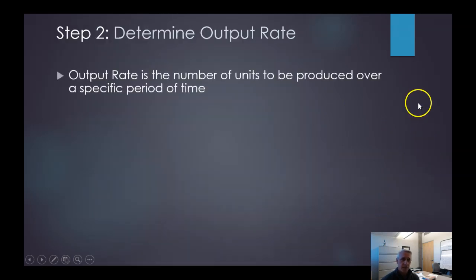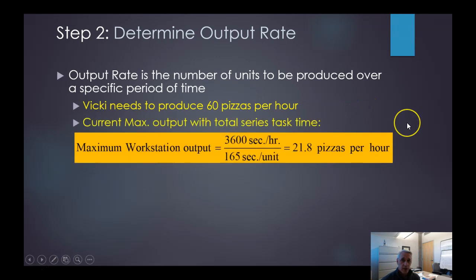Okay, so now we determine our output rate. The output rate is the number of units to be produced over a specific period of time. So in the example we have, the owner Vicki needs to produce 60 pizzas an hour. She needs to figure out how she can do that. So the current max of what she has is how many seconds are available to her in an hour and what's the total series task time she's working with now. And we calculated the total series task time of 165 seconds per pizza or per unit, but she has 3600 seconds in one hour. So you take that and divide it by the 165. So right now the way her current process is in series is that you've got 21.8 pizzas per hour assuming you have one workstation or just those tasks in the series. Now that's not even close to 60 pizzas per hour.